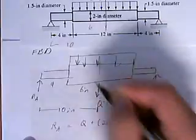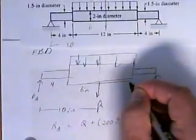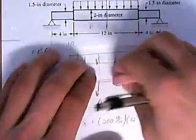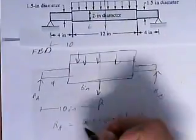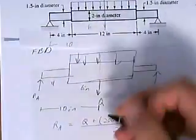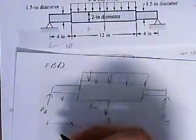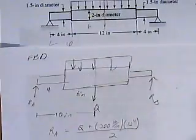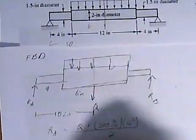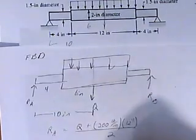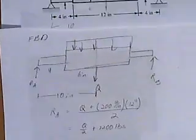times 12 inches, which is the length of this fat part. All over two. So, divide the total downward force by two, and you have one half of the total reaction force pushing back up. So that's going to equal Q over 2 plus 1200 pounds.